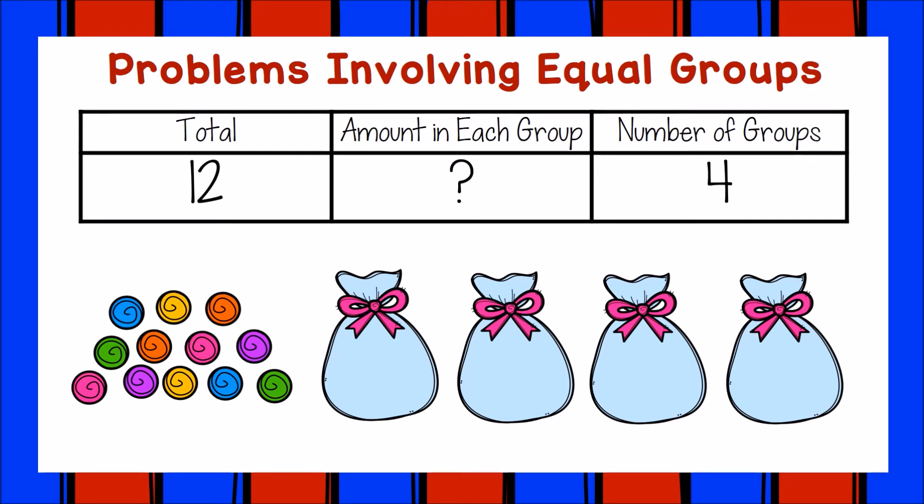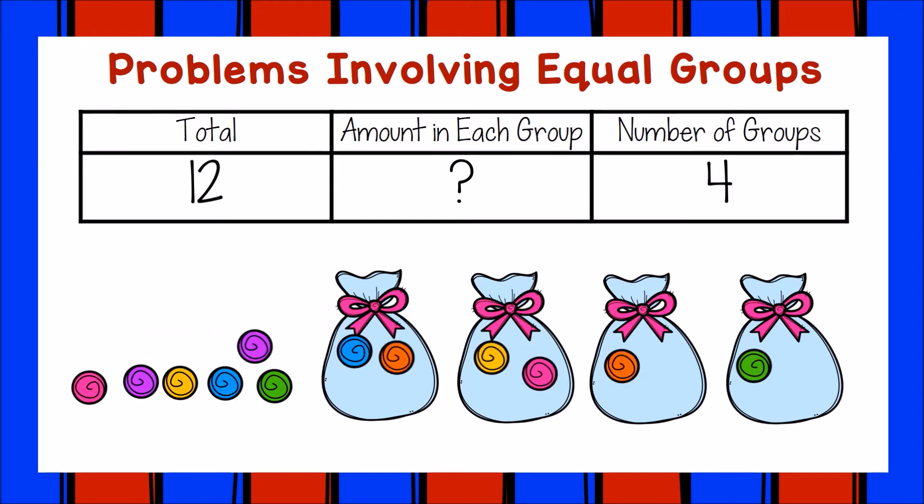Because we know the total and we know the number of groups, we can make fair shares by putting one piece of candy into each bag until we've shared out all of the candy. Look, there are three pieces in each bag. The amount in each group is three.